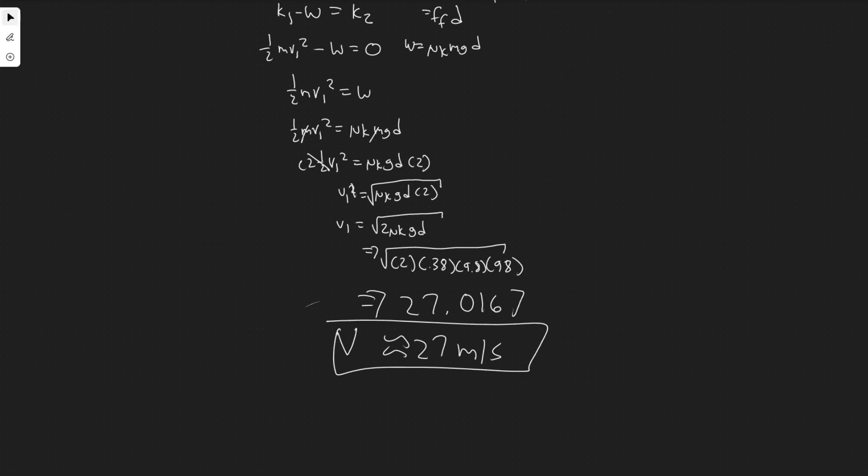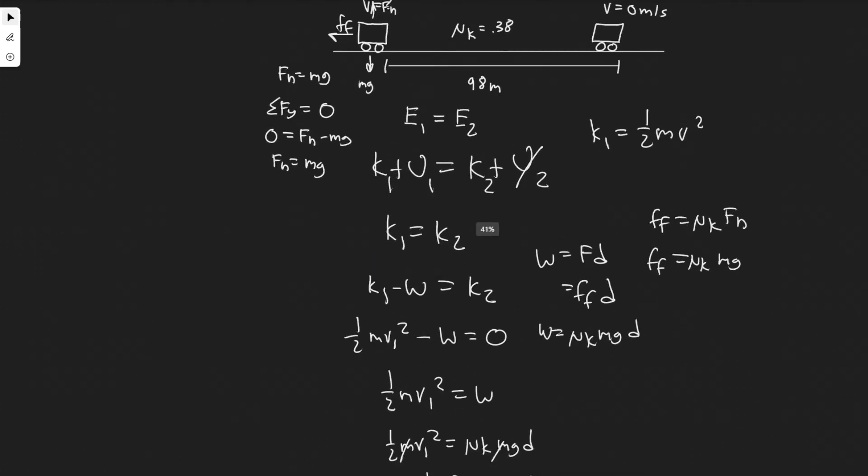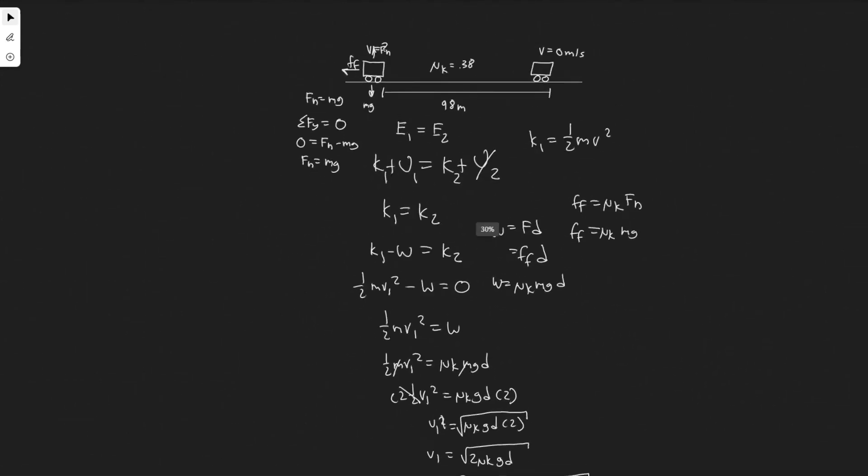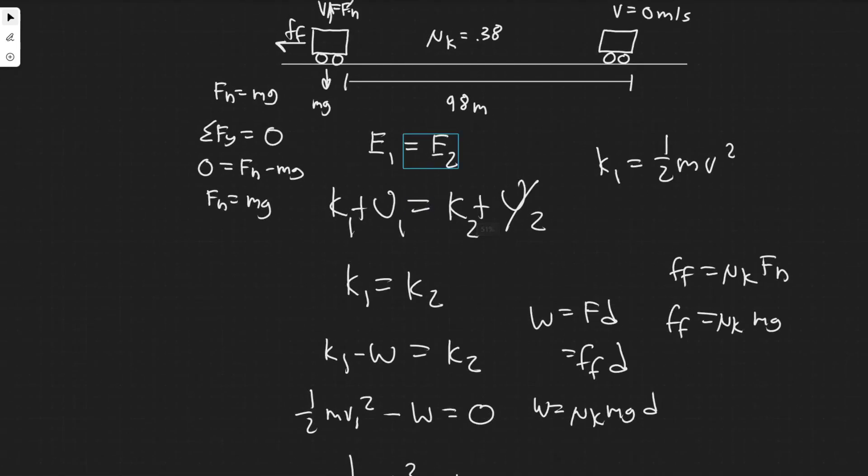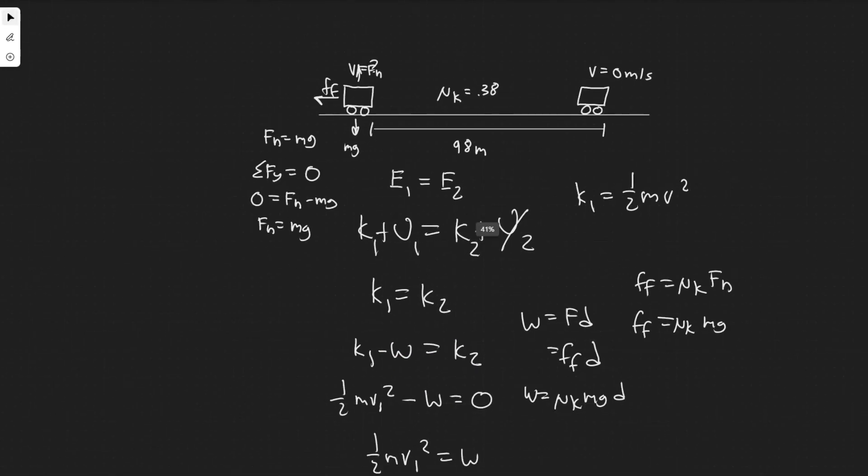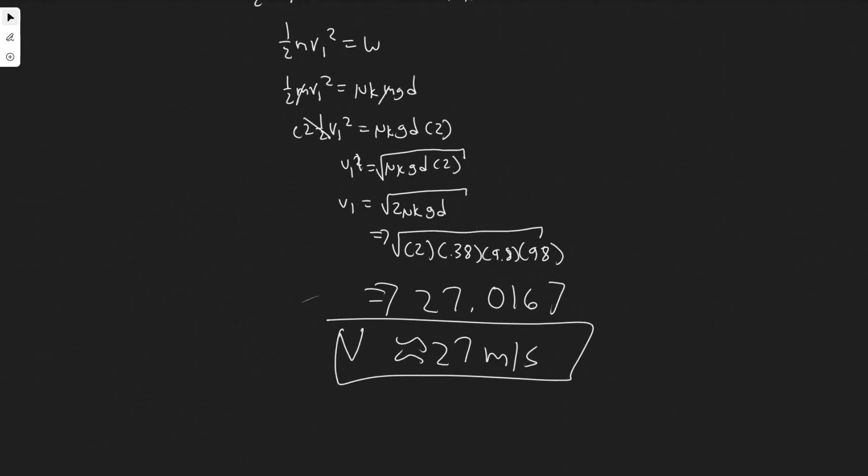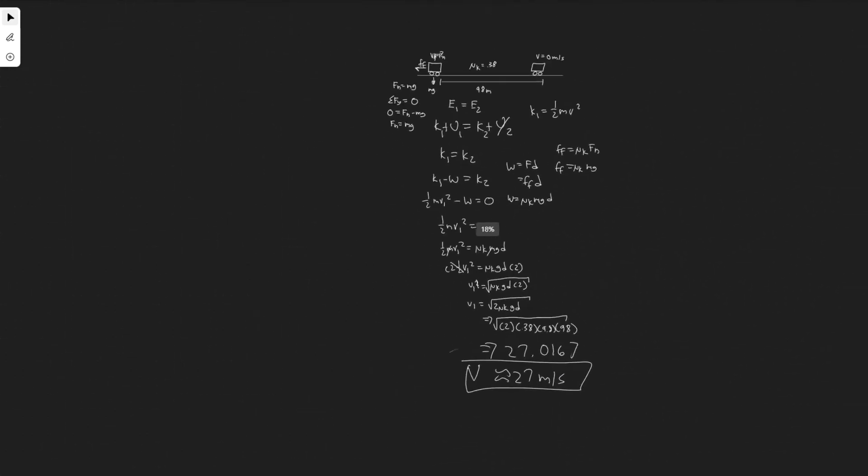Just to recap what we used to solve this problem, we used the law of conservation of energy. We had to account for the energy lost as a result of the force of friction. Then it's just a matter of solving for these values and plugging in. That gives you your answer, 27 meters per second. Hopefully you found this video helpful.